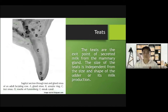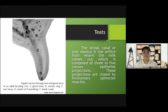Teats. The teats are the exit point of the secreted milk from the mammary gland. The size of the teats is independent from the size and shape of the udder, or its milk production. The streak canal of the teat, or the teat meatus, is the opening from where the milk comes out, which is composed of three to five convex epithelial projections. These projections are closed by involuntary sphincter muscles.